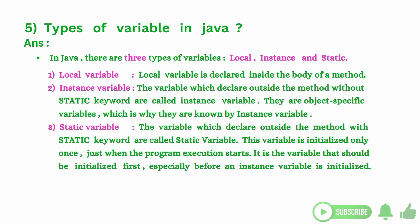In Java there are 3 types of variables: local, instance, and static. A local variable is declared inside the body of a method.